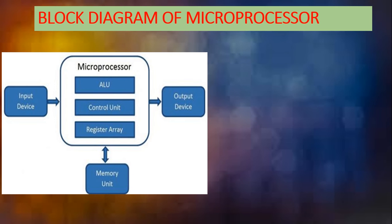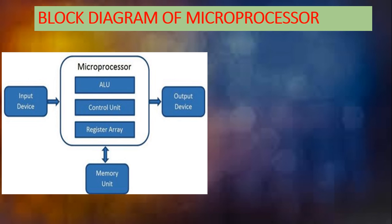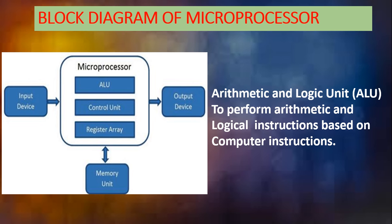The microprocessor diagram is similar to what we studied in Chapter 1. We have an input device, then in the middle we have a CPU — the CPU is nothing but the microprocessor — and we have output devices. The microprocessor is made up of three main units: ALU, Control Unit, and Register. ALU stands for Arithmetic and Logical Unit.